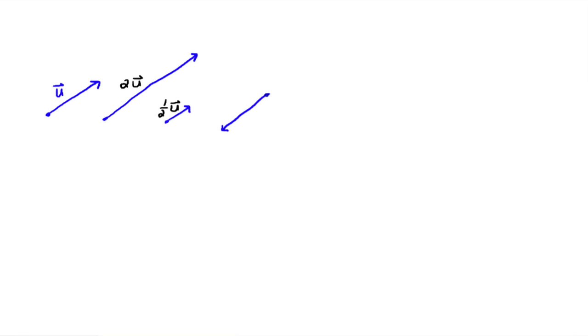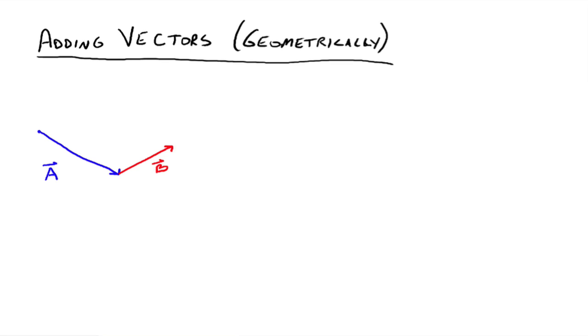And if it goes the opposite direction, so it's got the same magnitude just in the opposite direction, this would be negative U. This is called a scalar multiplication because you're multiplying the original vector by some scalar number. Remember, a scalar number is just some real number. So here it would be multiplied by 2, here by a half, and here by negative 1.